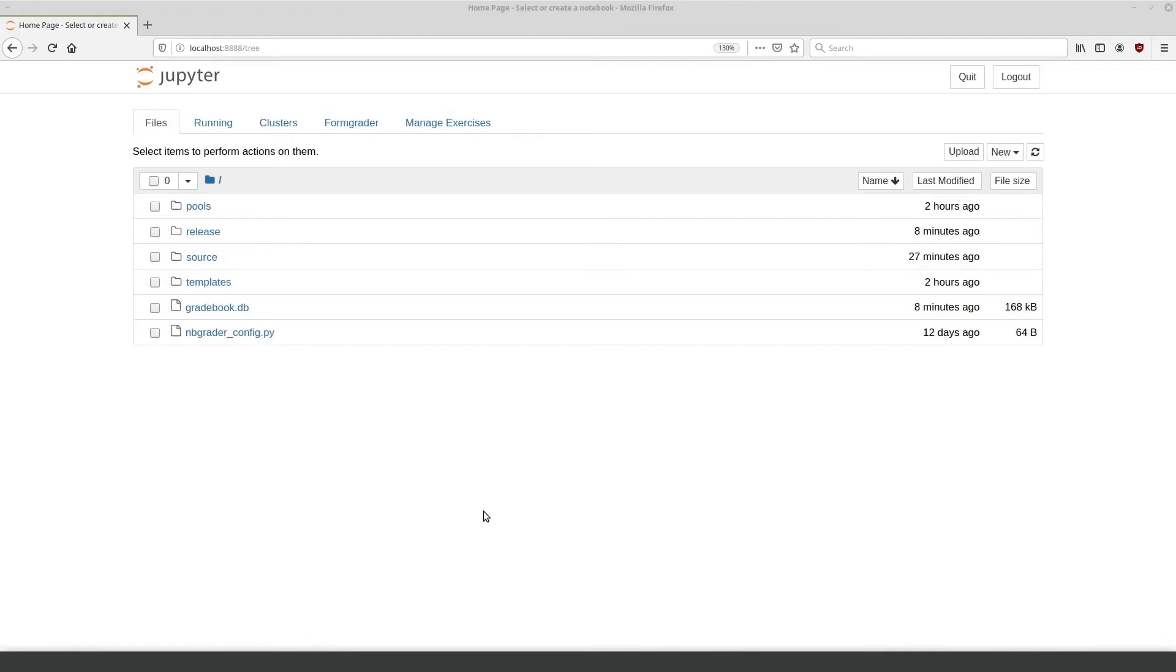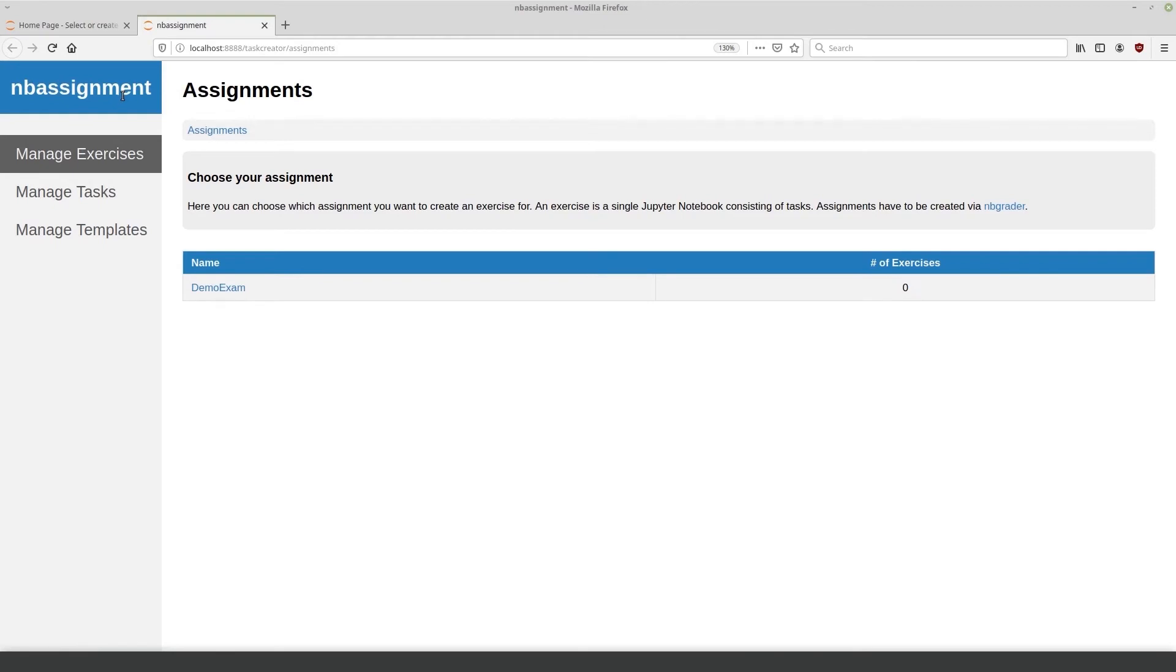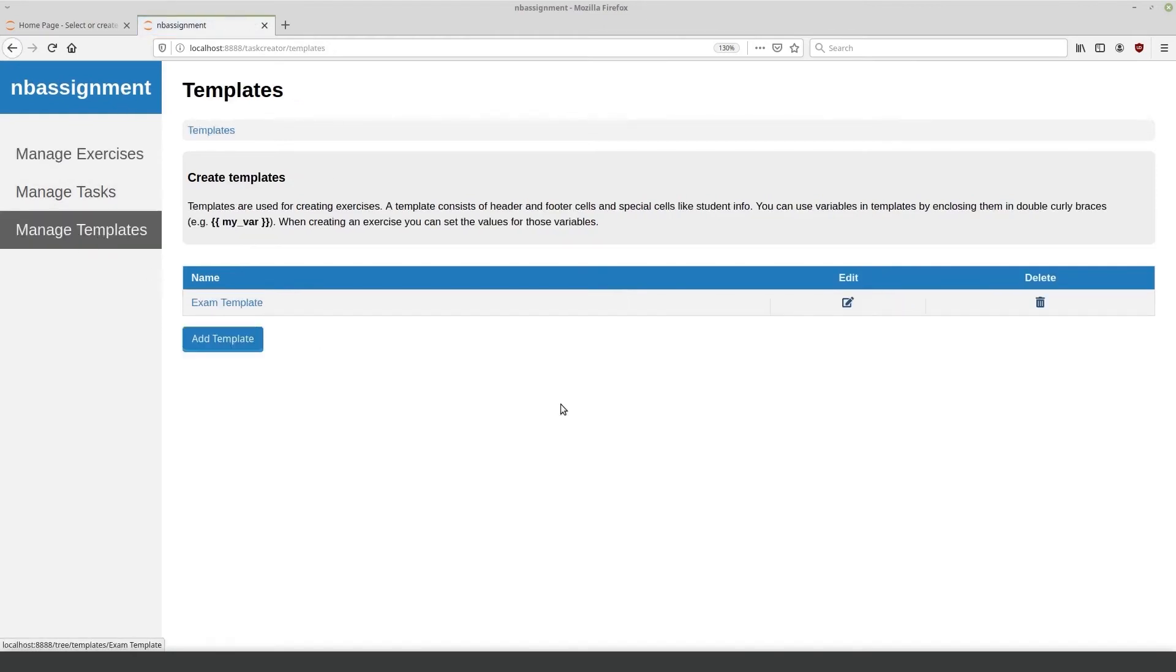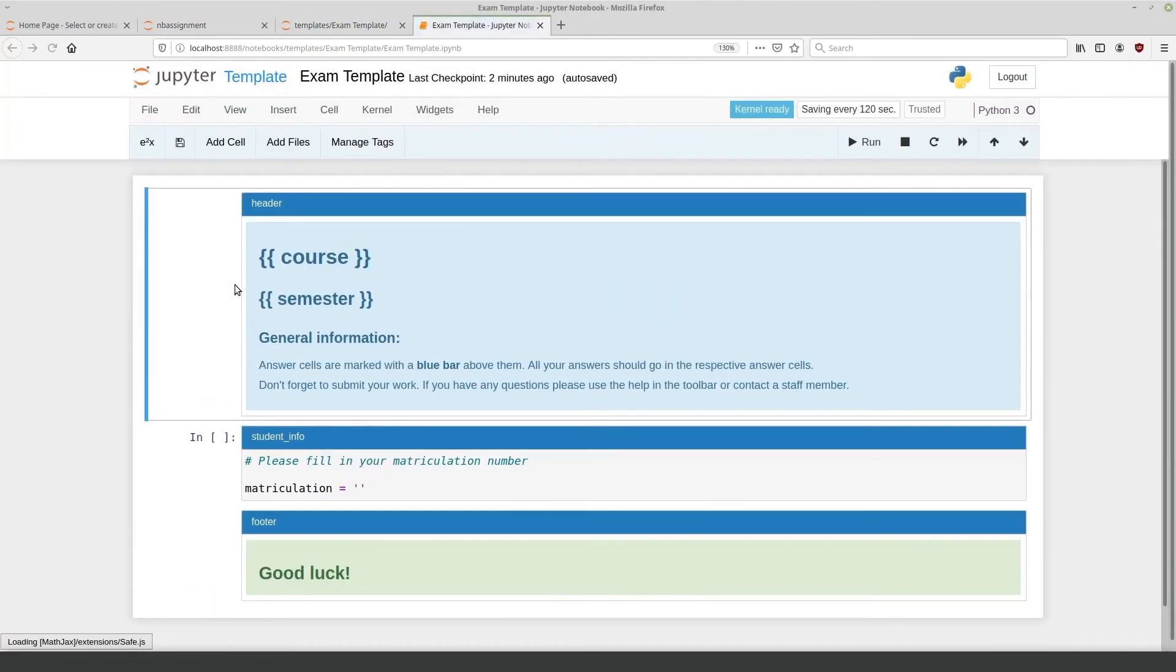We start by looking at the teacher mode and creating our exam. We click here on manage exercises to get to our tool NB Assignment. I will explain the menu points as we go along and we will start with templates. The template basically defines the base format of the exercise. I already created one exam template. Let's look into it. And we can see we have here a menu which lets us add cells like footer, group info, header, student info. We already have a header cell here, a student info, and a footer. And what you might notice is that we have the two words course and semester enclosed in double curly braces. These are variables which can later on be replaced when creating our exercise.